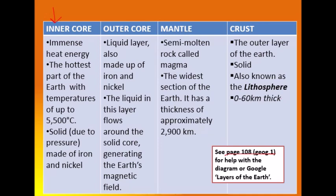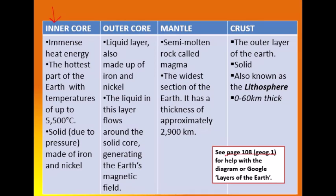Inside the earth there is incredible heat energy. What's happening is radioactive decay — lots of reactions which mean that heat energy is released from the inner core, generating heat which radiates out from inside the earth. The hottest part of the earth, the inner core can get up to 5,000 to 5,500 degrees Celsius. It's solid — rather than being liquid or molten magma, it is completely solid due to the immense pressure of all the other layers pushing down on it. And it's made of iron and nickel — actual metals inside the earth.